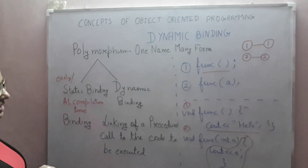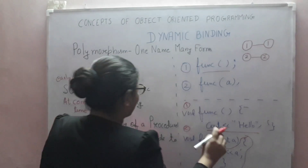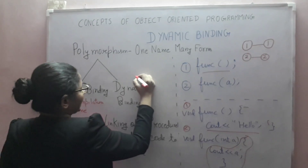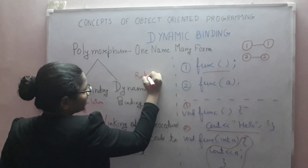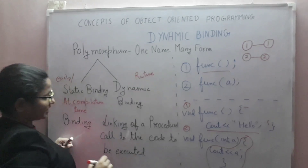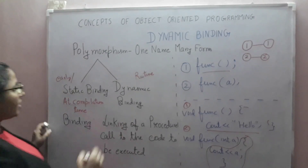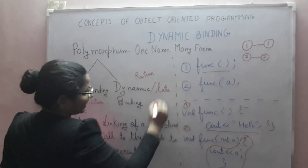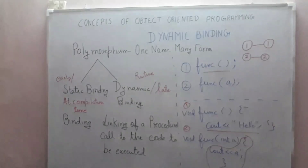When this binding is done at runtime, then it is known as dynamic binding or late binding. Let's see an example of dynamic binding.